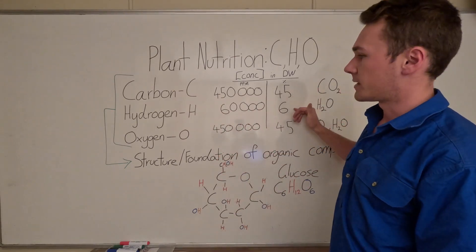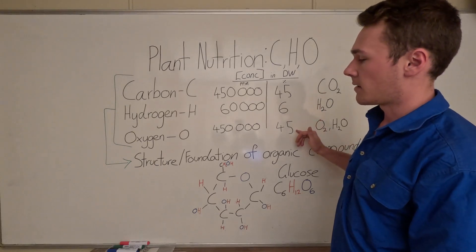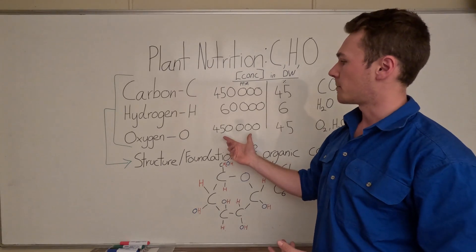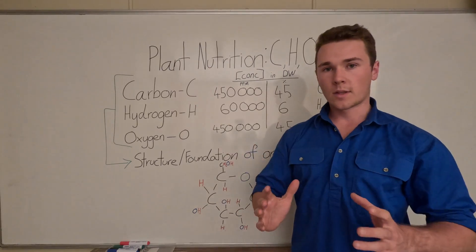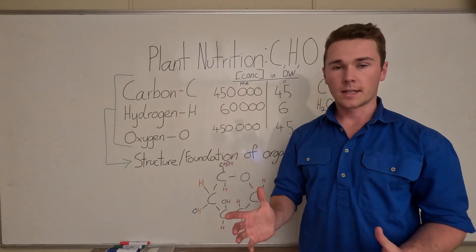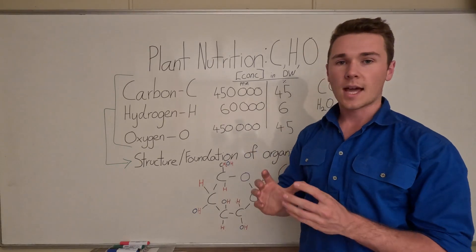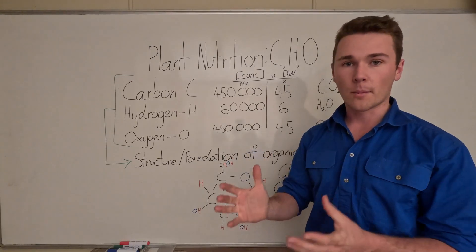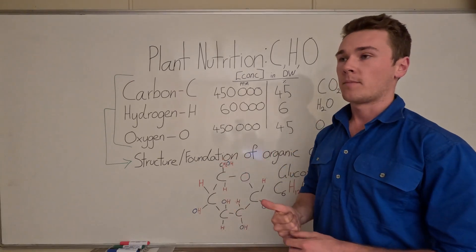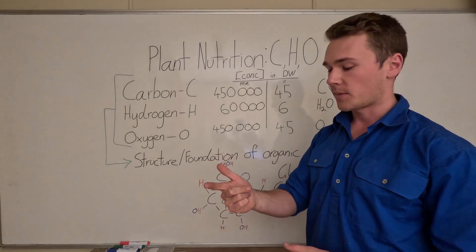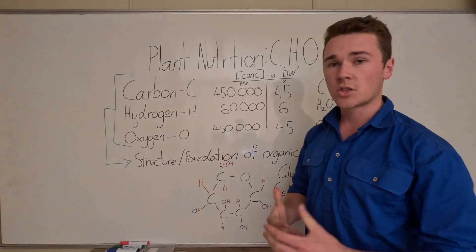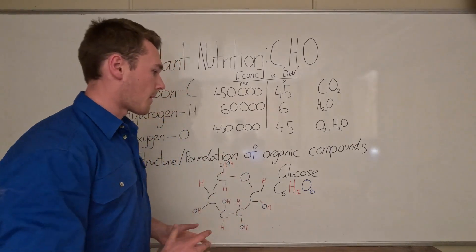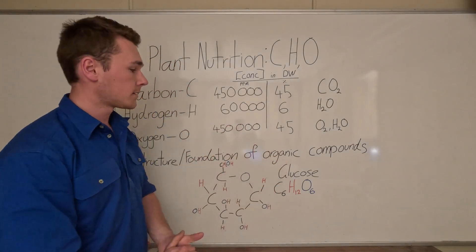So carbon makes up 45%, hydrogen itself makes up 6%, and then oxygen makes up another 45%. That's the concentrations in parts per million. Now the reason why these make up basically the bulk of the plant is because they have a really important function as the structural backbone of the plant. Every organic compound has carbon, not all have oxygen but most have oxygen, and they all have hydrogen basically. So within plants, these four elements or nutrients make up the backbone of all our organic compounds.